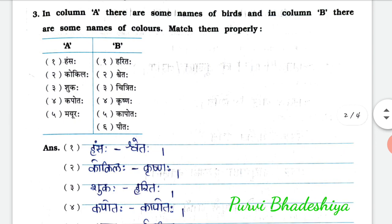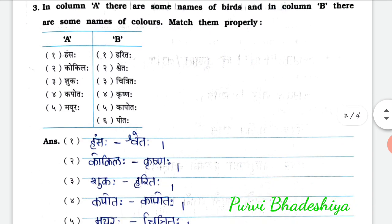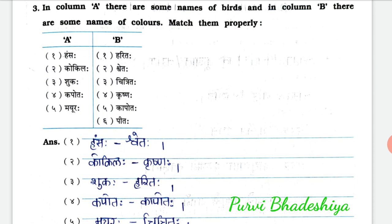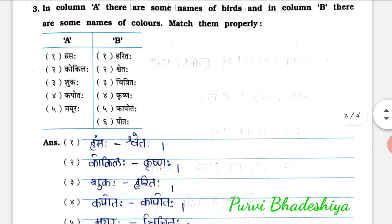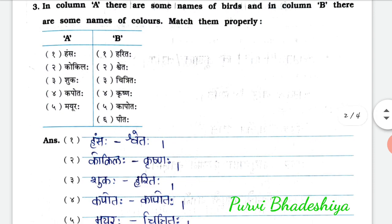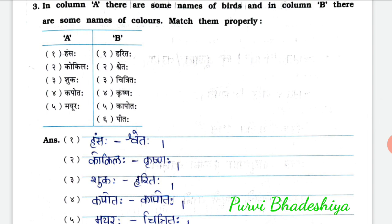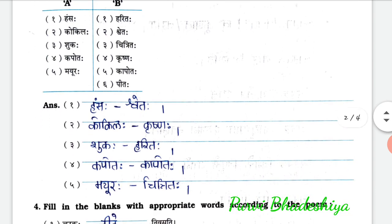Now exercise number 3. In column A there are some names of birds, and in column B there are some names of colors. Match them properly according to the bird — we have to match the color of that bird. So answers are like this.